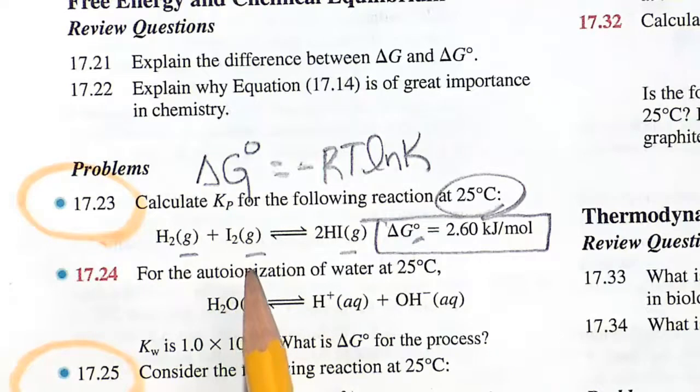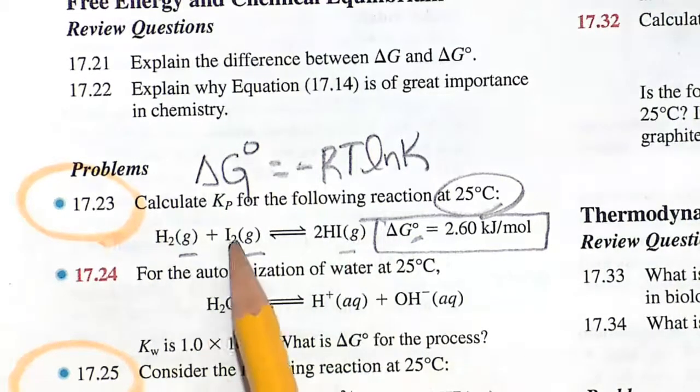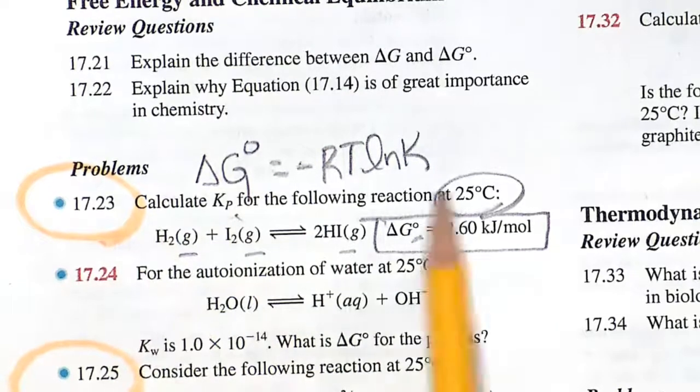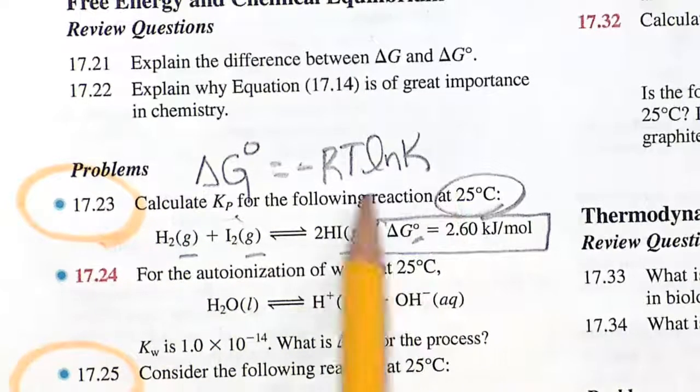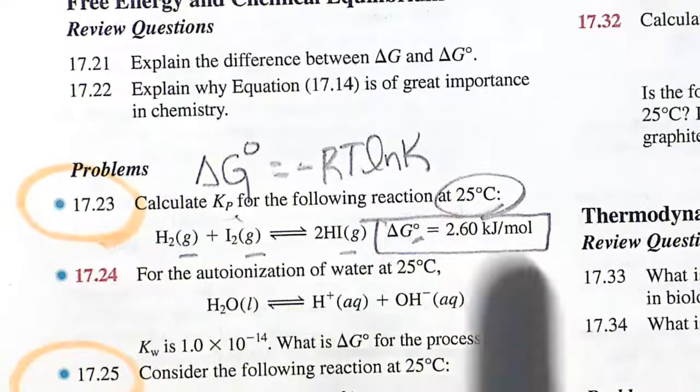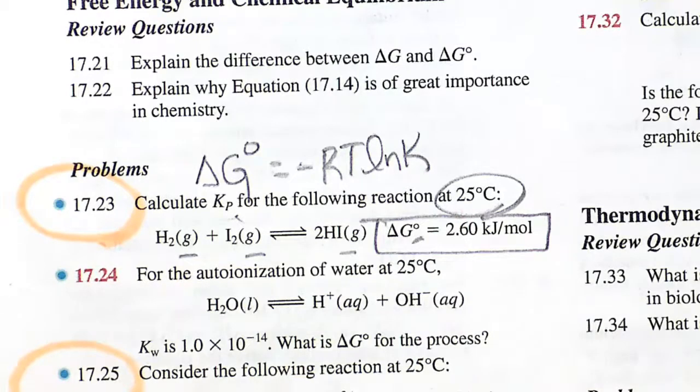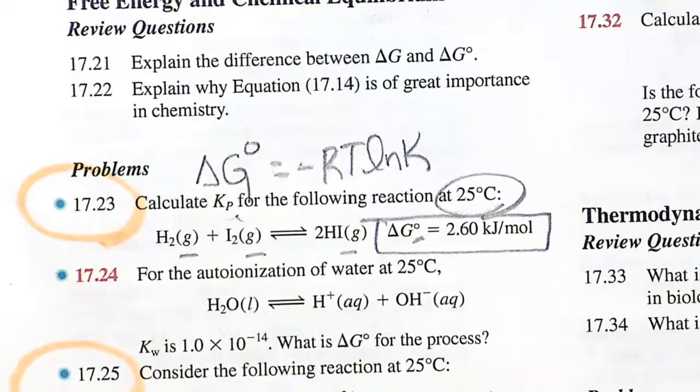Remember, K is products over reactants, and here we can use pressures. They're asking for Kp, so it's going to be equilibrium constant K in terms of pressure. So let's go ahead and solve this by plugging everything in and solving for K. In this case, the K is Kp.